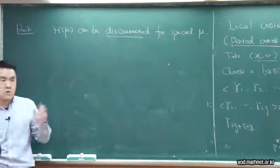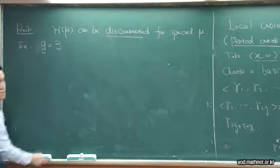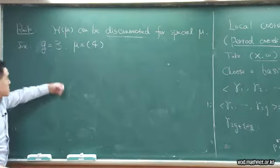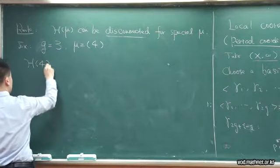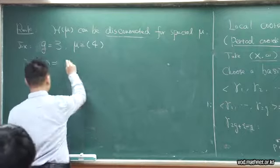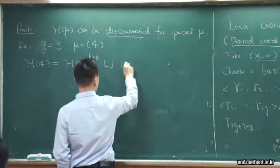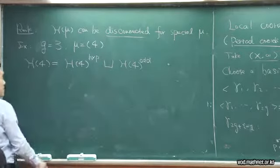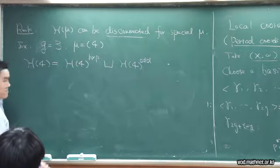Let me show you one example that also explains the situation in general. Let's take genus equal to 3, so 2g−2 = 4. Let's take μ equal to the partition of 2g−2 consisting of a single entry of value 4. In this case, I claim this space consists of two disjoint components. The first one is called the hyperelliptic component, labeled HYP.